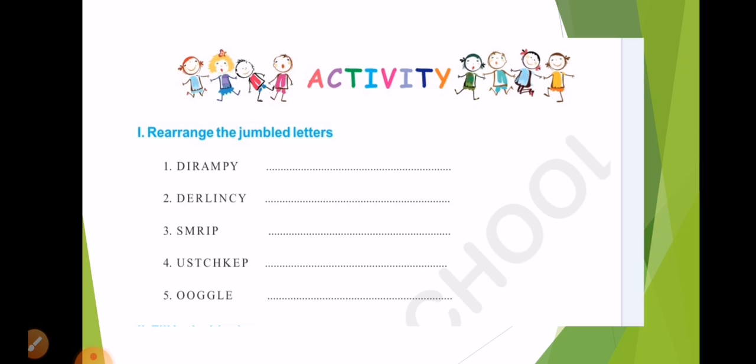See here there are 5 jumbled letters given. You have to find out the jumbled letters. So for the first one, the answer is Pyramid. The spelling is P-Y-R-A-M-I-D.